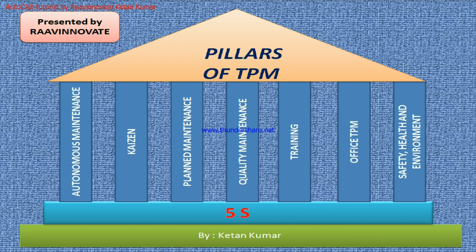There are basically 7 pillars of TPM. The structure of TPM is like a house — we have a base, then walls and pillars. The base for Total Productive Maintenance is 5S. The 7 pillars are: Autonomous Maintenance, Kaizen, Planned Maintenance, Quality Maintenance, Training, Office TPM, and Safety, Health and Environment. We will be discussing 5S and all the pillars in the next video.